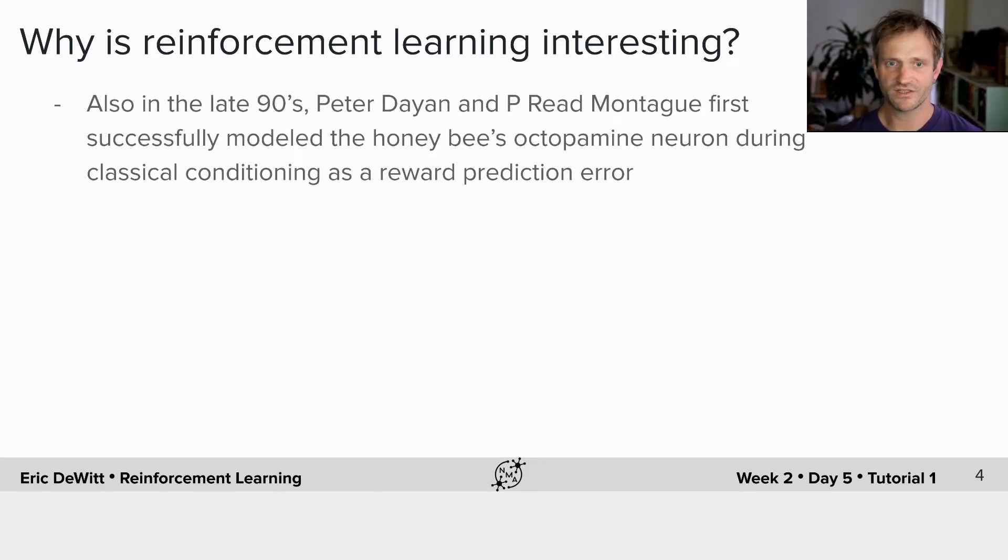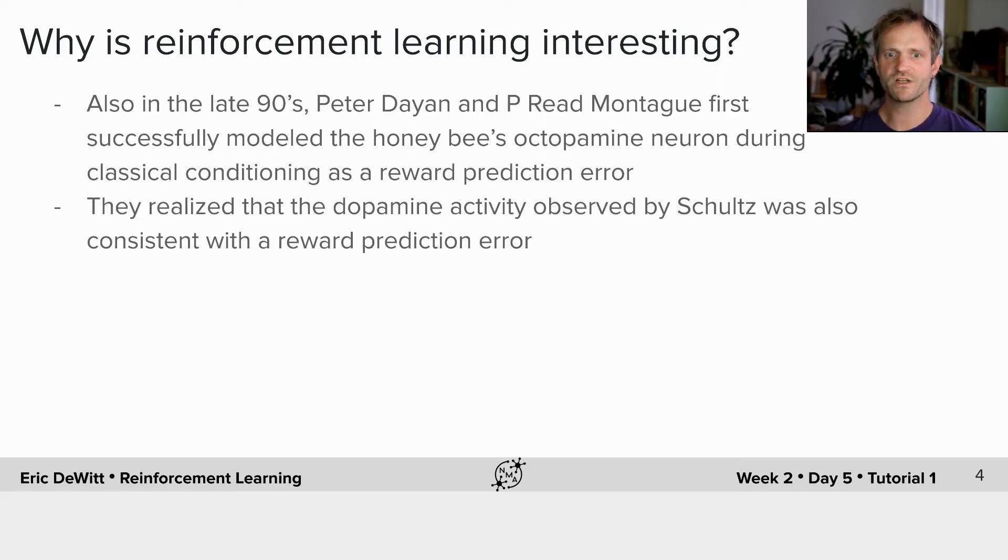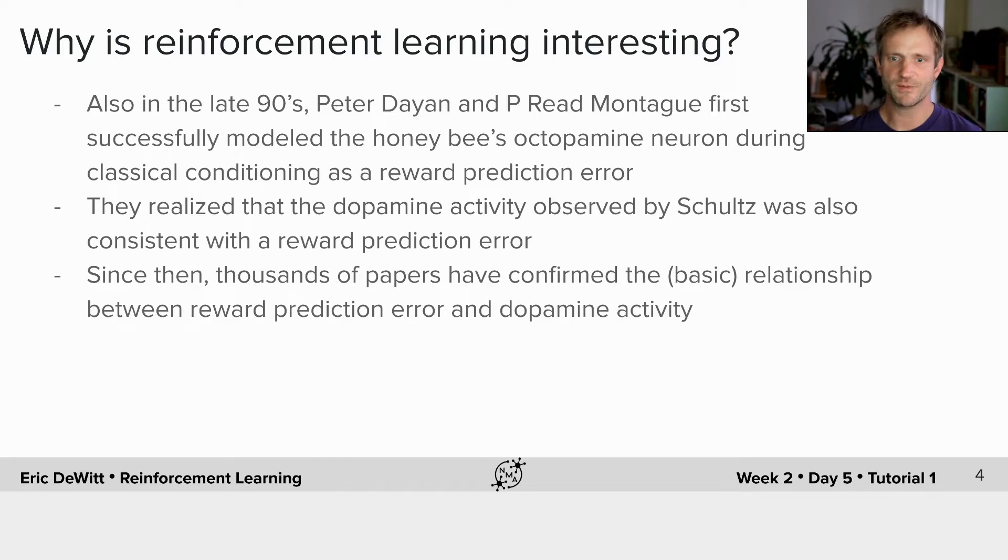At the same time, in the late 1990s, Peter Dayan and Read Montague first successfully modeled the honeybee's octopamine neuron during classical conditioning as a reward prediction error. They realized that the dopamine activity observed by Schultz was also consistent with a reward prediction error. Since then, thousands of papers have confirmed the basic relationship between reward prediction error and dopamine activity.